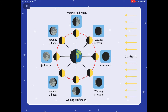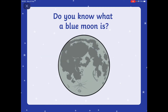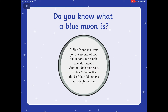Do you know what a blue moon is? There are a couple of different explanations. One says that it's the second of two full moons in a single calendar month — remember months are different lengths. And there's another definition that says a blue moon is the third of four full moons in a single season.